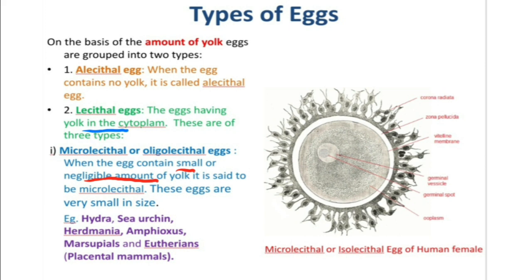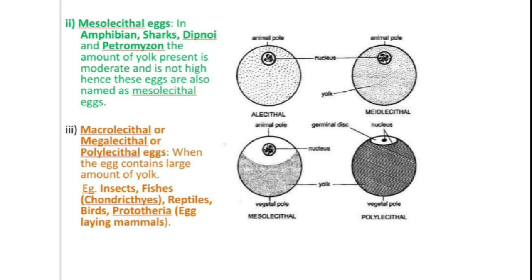Microlecithal or oligolecithal eggs are very small in size. Examples include eggs of hydra, sea urchin, Herdmania, amphioxus, marsupials and eutherians such as placental mammals. Here in this diagram you can see the microlecithal or isolecithal egg of the human female. Second are the mesolecithal eggs, found in amphibians, sharks, dipnoi (lungfishes) and Petromyzon, where the amount of yolk present is moderate and not high.